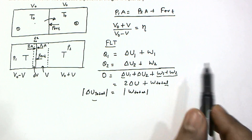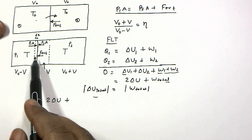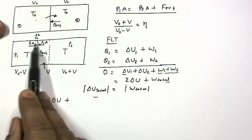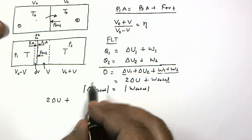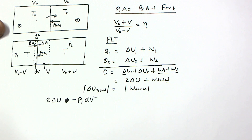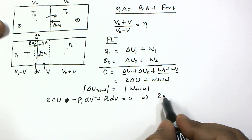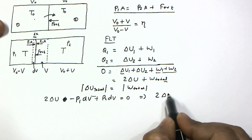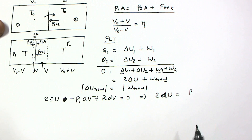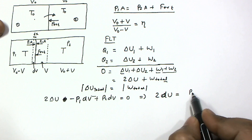Writing W1 and W2 individually: W1 is negative because the piston moves toward that gas, so W1 = −P1·dV. The work done on the second compartment gas is positive, so W2 = +P2·dV. Therefore the total work done equals (P1 − P2)·dV, which equals twice the total change in internal energy.